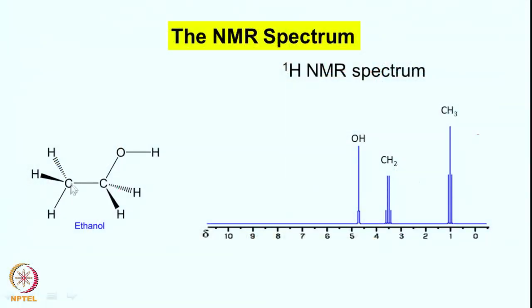There are parameters called chemical shift and coupling constants. For example, if you have a molecule such as ethanol — one of the simplest molecules on which chemical shift was discovered by Dr. Dharmati when he was in Felix Bloch's lab — this molecule has three protons here, two protons here, and one proton here.